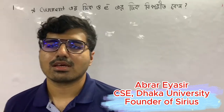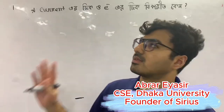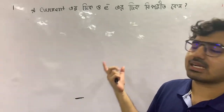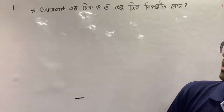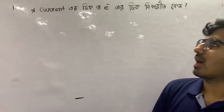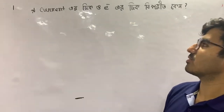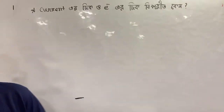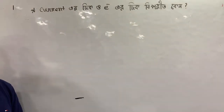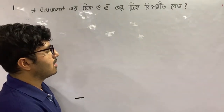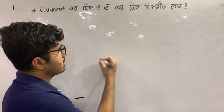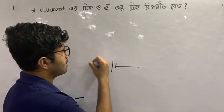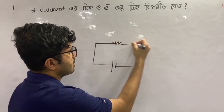Hello everyone. The question is, for class 9 or 10, we have to say that the current or electron is shown as well. The main thing is the circuit is drawn — it's the basic circuit.